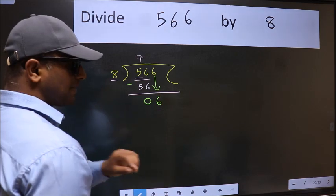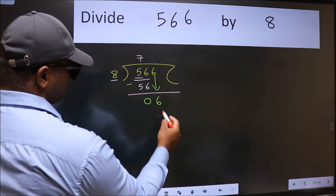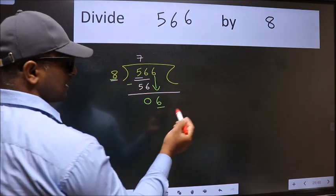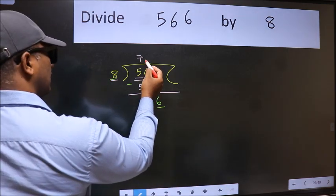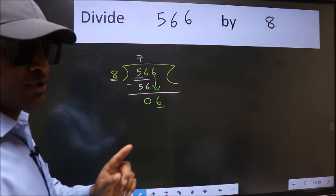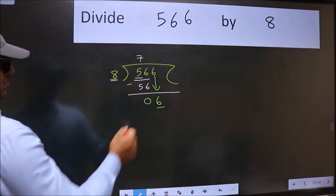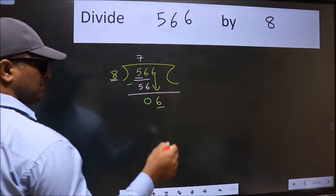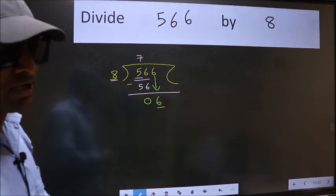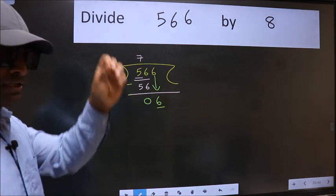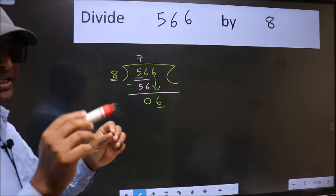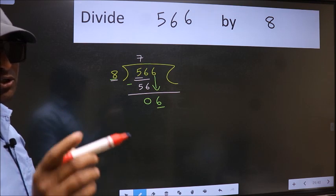After this step, the mistake happens, and the mistake is this: here we have 6 and here 8. 6 is smaller than 8, so what many do is they directly put a dot and take 0, which is wrong. Why is it wrong? Because you just brought this number down, and in the same step you want to put a dot and take 0 — both at the same step — you should not do that.